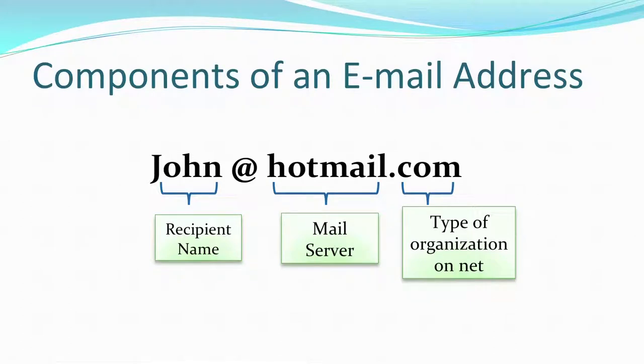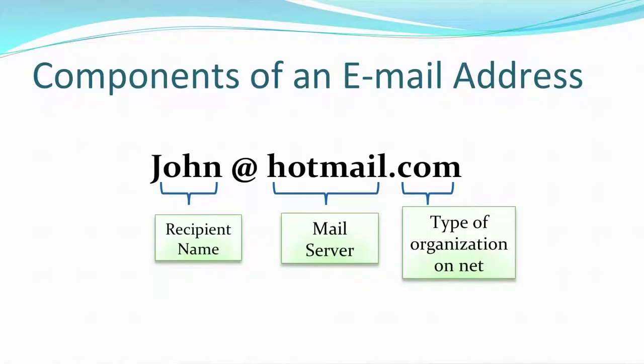This screen here shows you the components of an email address. It has the recipient name as the first portion — in this example, 'john' is the recipient name. Then every email address has an identifier, which is the '@' symbol. Next, 'hotmail' — hotmail is the mail server or mail service provider. There are many mail service providers; for example, Gmail — when you create an email ID using Gmail, the address changes to '@gmail.com'. Similarly, if you use Yahoo, it changes to 'yahoo.com'. Depending on the mail service you are using, this section of the email changes accordingly.